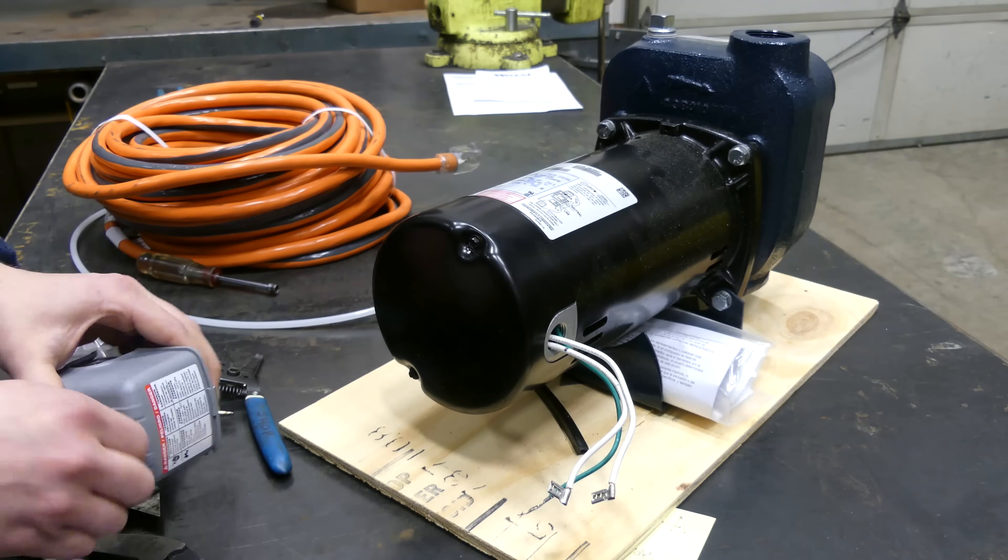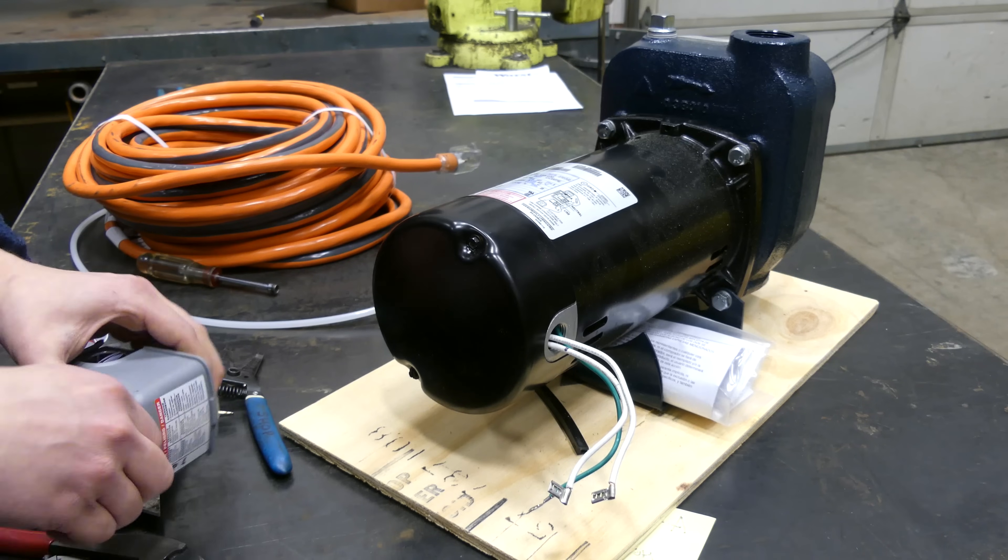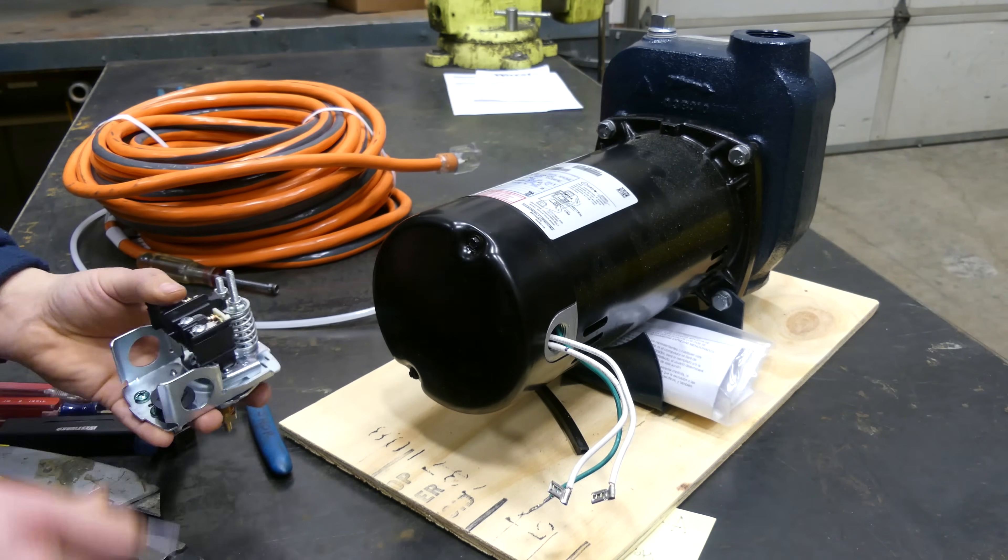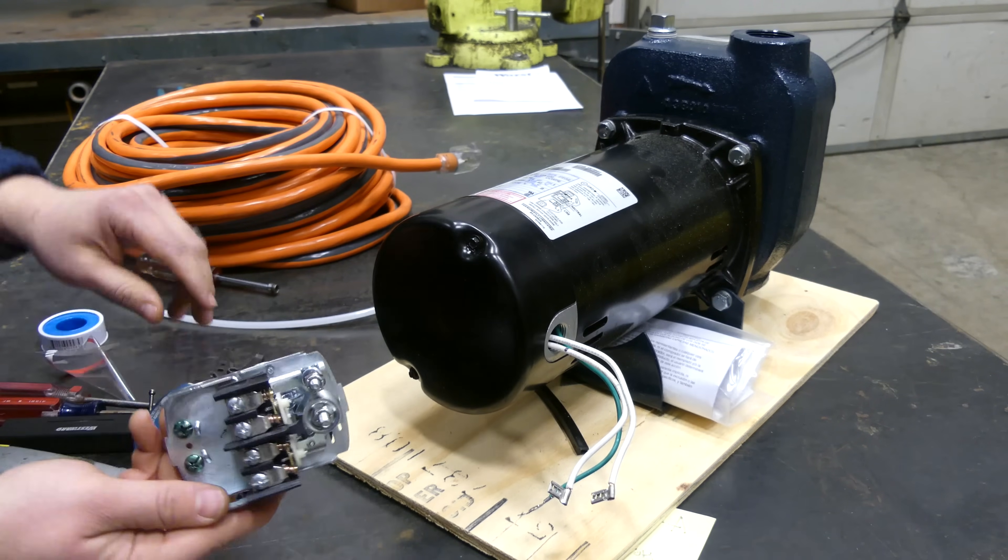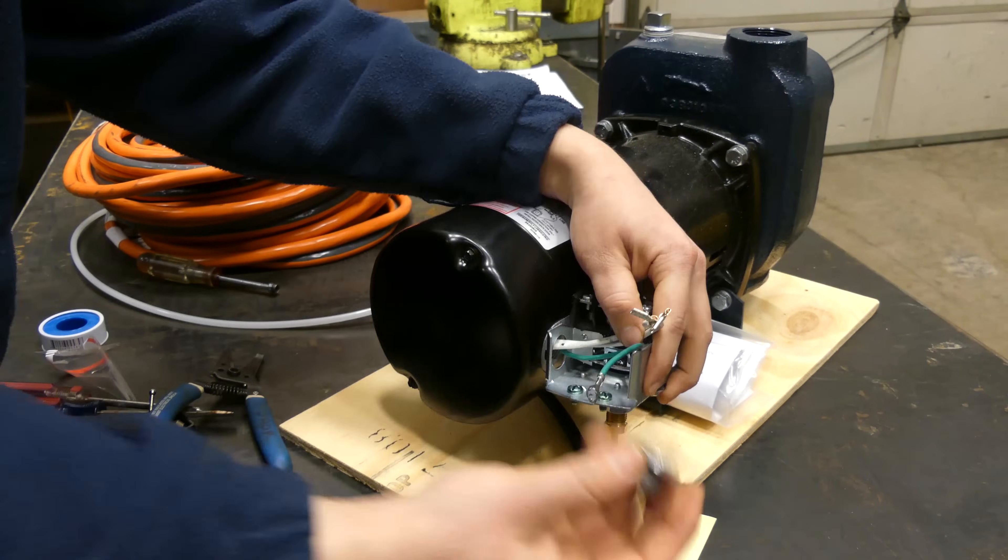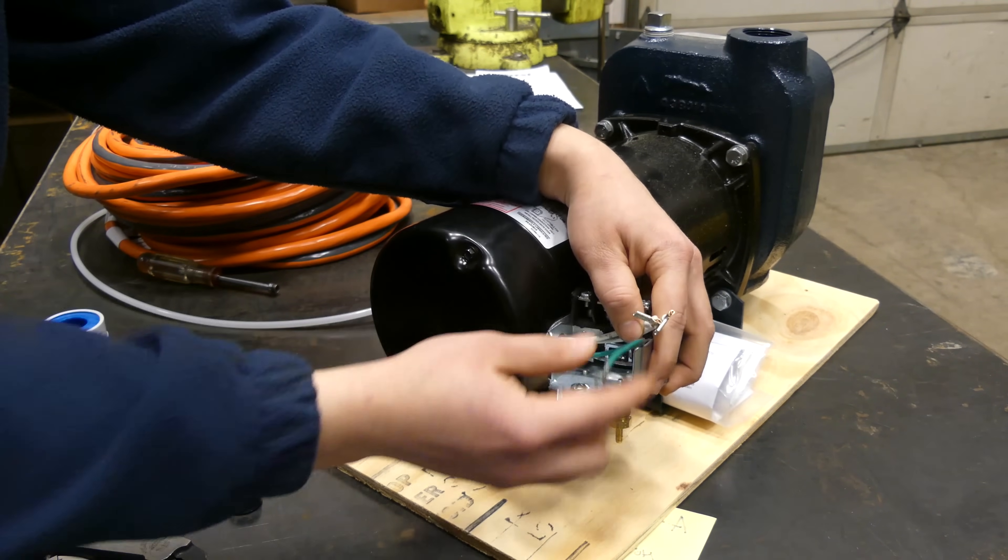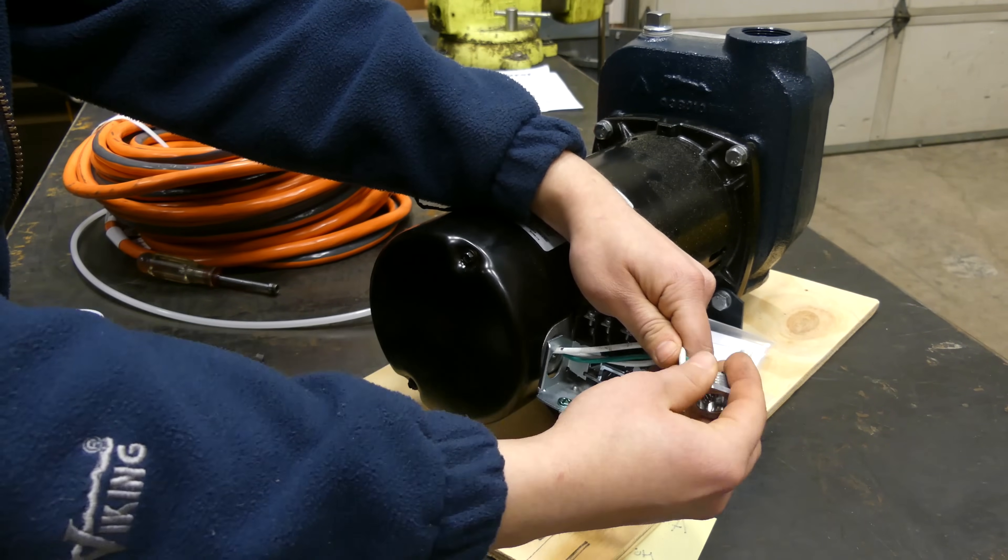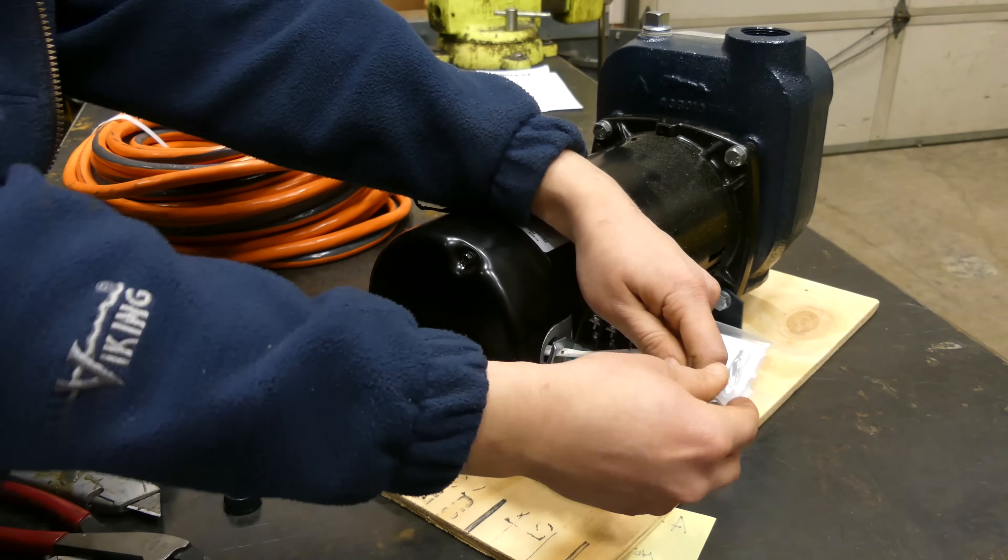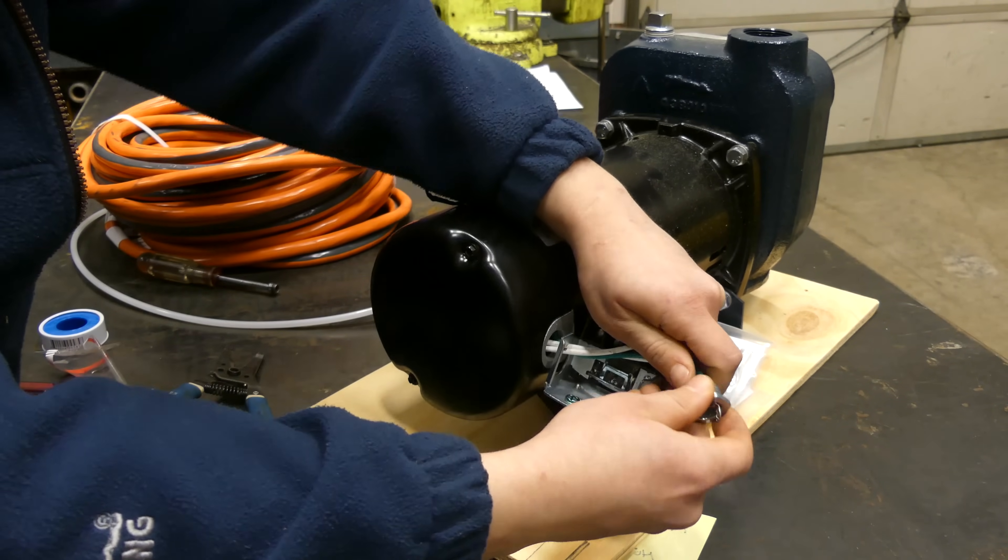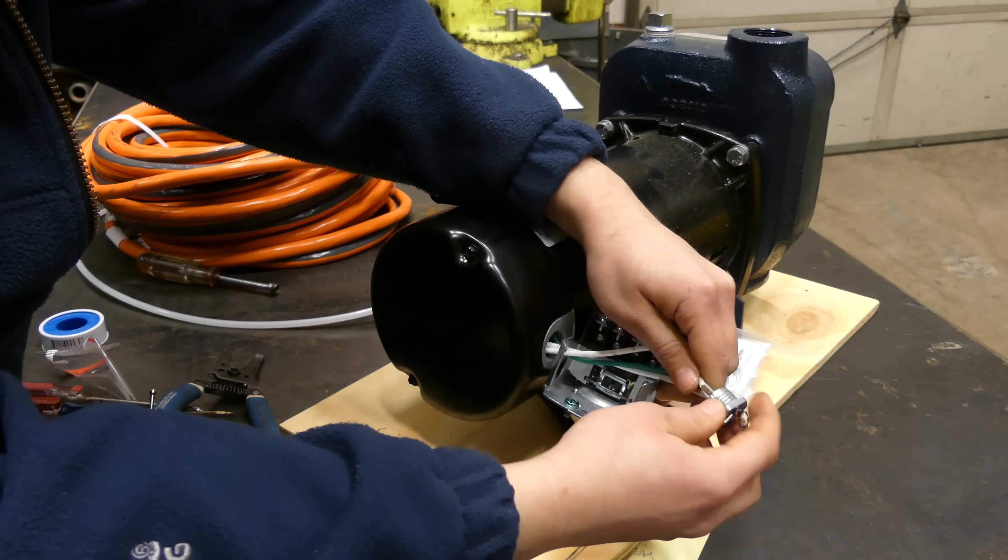The first thing that we're going to want to do here is just go ahead and get our pressure switch mounted, and then we can feed our wires through and kind of go from there. And then to hold this on, we've got this connector here. This is an electrical connector, and it's called a nipple close. Very strange name, but I didn't name it.